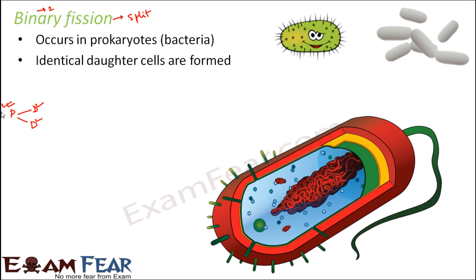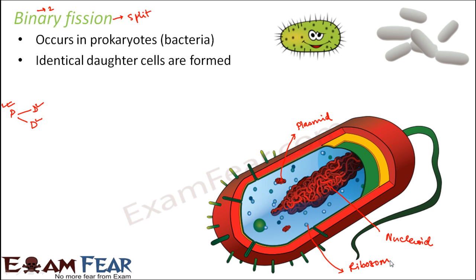When we talk about the process of binary fission, three parts play a very important role: the nucleoid, plasmid, and ribosome. The nucleoid is the region that contains the genetic material — in prokaryotes there is no nucleus or nuclear membrane, just a region where the genetic material exists. Small chunks of DNA present elsewhere are called plasmids. Ribosomes help in synthesizing proteins. These three parts play the most important role in binary fission.